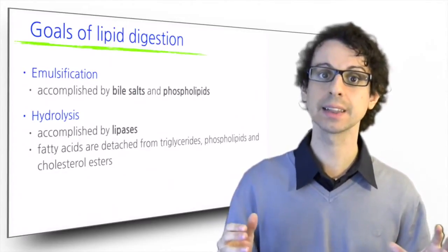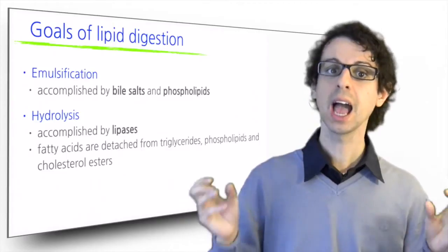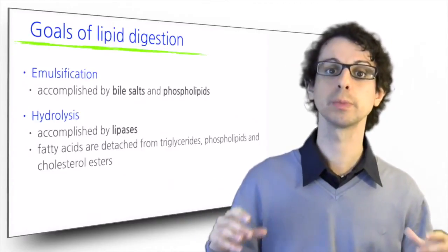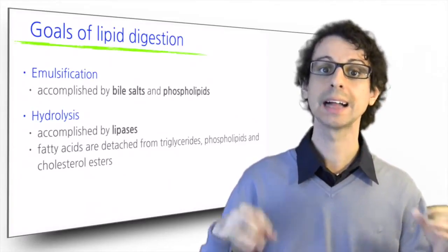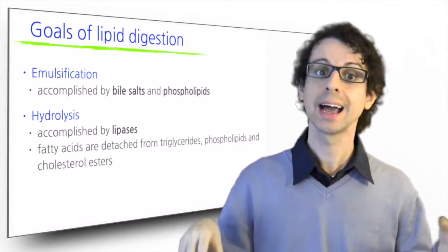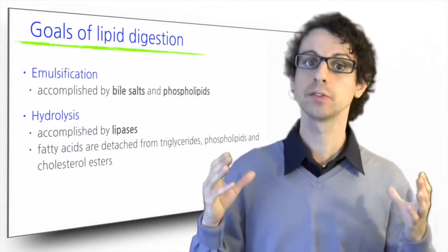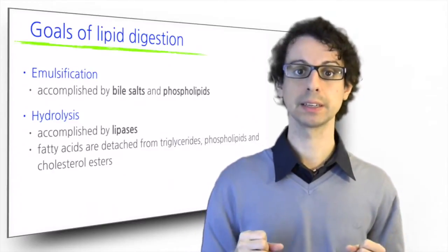Emulsification is accomplished by the bile, a watery solution which is made in our liver and stored in our gallbladder and contains bile salts, phospholipids, free cholesterol and other metabolites.